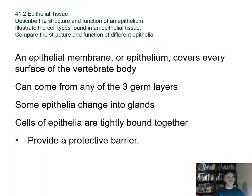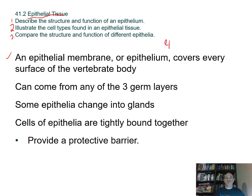This section covers the first of the primary tissues: epithelial tissue. Learning outcomes include describing the structure and function of an epithelium, illustrating the cell types found in epithelial tissues, and comparing different epithelia. The prefix 'epi' means 'at the surface,' so epithelia cover surfaces — the surface of your body (your skin) and the surfaces of organs inside you.